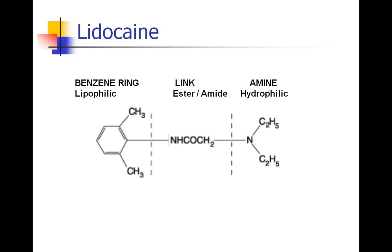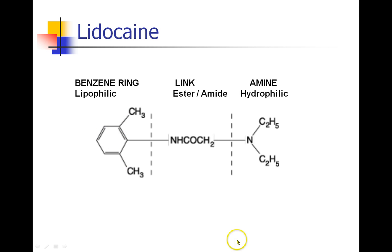Here is the molecular structure of lidocaine as an example of a local anesthetic. All local anesthetics have in common a lipophilic side — a benzene ring in lidocaine — a hydrophilic side, which is an amine, and a linkage group, which is usually an ester or an amide. In lidocaine, it's an amide.